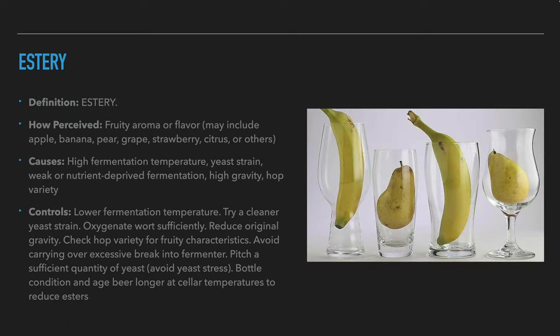The next flavor and aroma compounds we'll talk about are esters. Esters give fruit aromas and flavors — it can be apples, banana, pear, grapes, strawberries, citrus and more. The reasons for the appearance of more esters in beer are high fermentation temperatures, yeast strain, low nutrient fermentation, lack of oxygen and high gravity. To lower the amount of esters in beer, the brewer should use lower fermentation temperatures, try to use a cleaner yeast strain, oxygenate the wort properly before fermentation, lower the initial gravity and make sure that there is a sufficient amount of yeast.